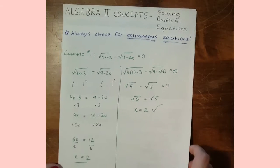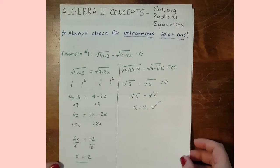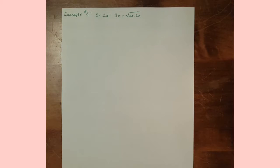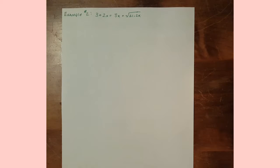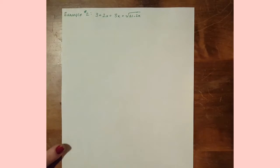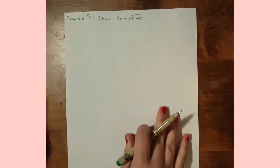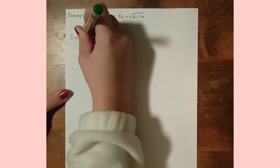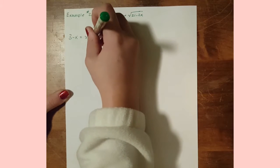Let's do one more radical equations example. In this example we have 3 plus 2x equals 3x plus the square root of the quantity 21 minus 2x. The first step is to isolate the radical on one side, so we subtract 3x to get 3 minus x equals the square root of 21 minus 2x.